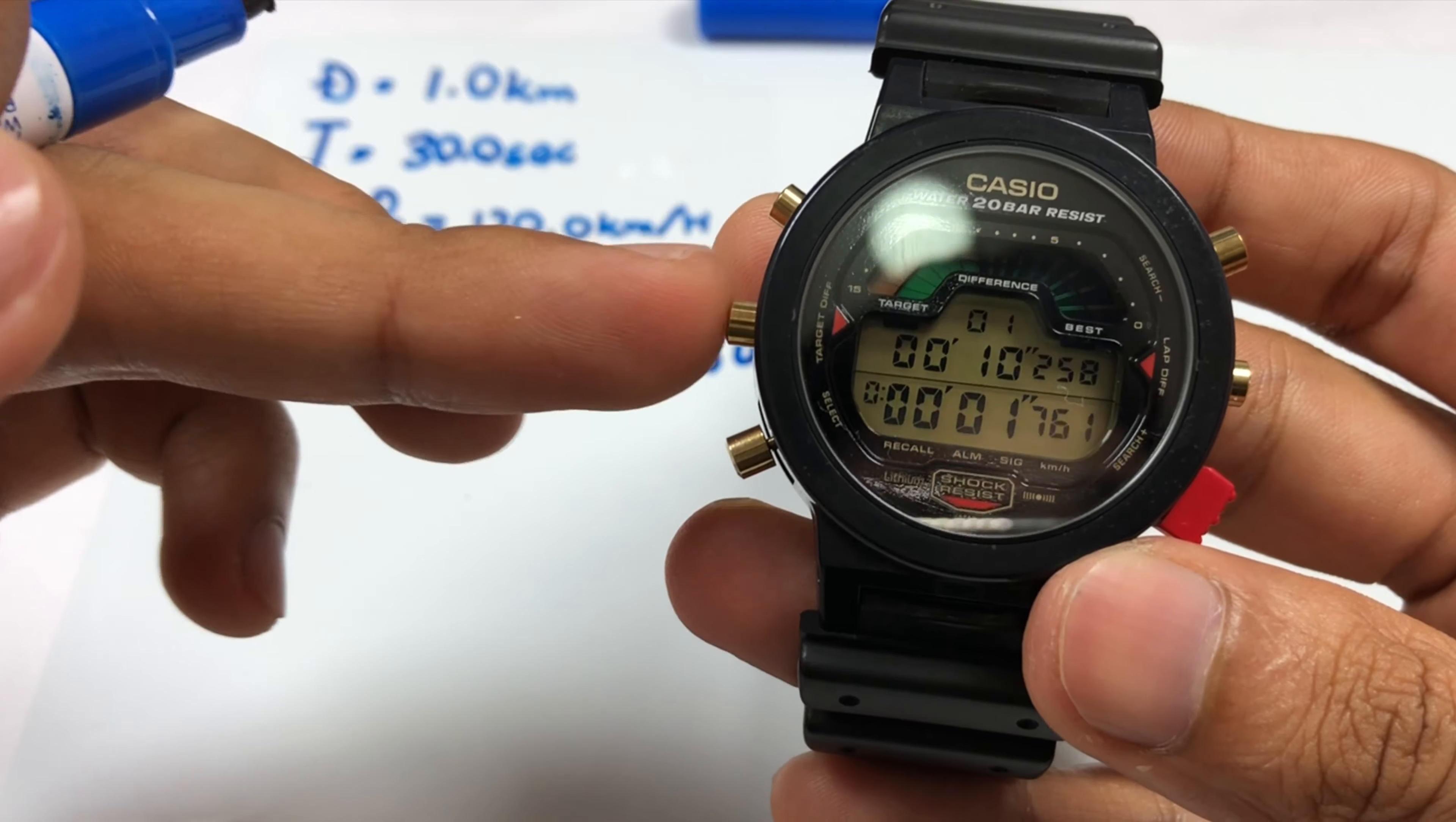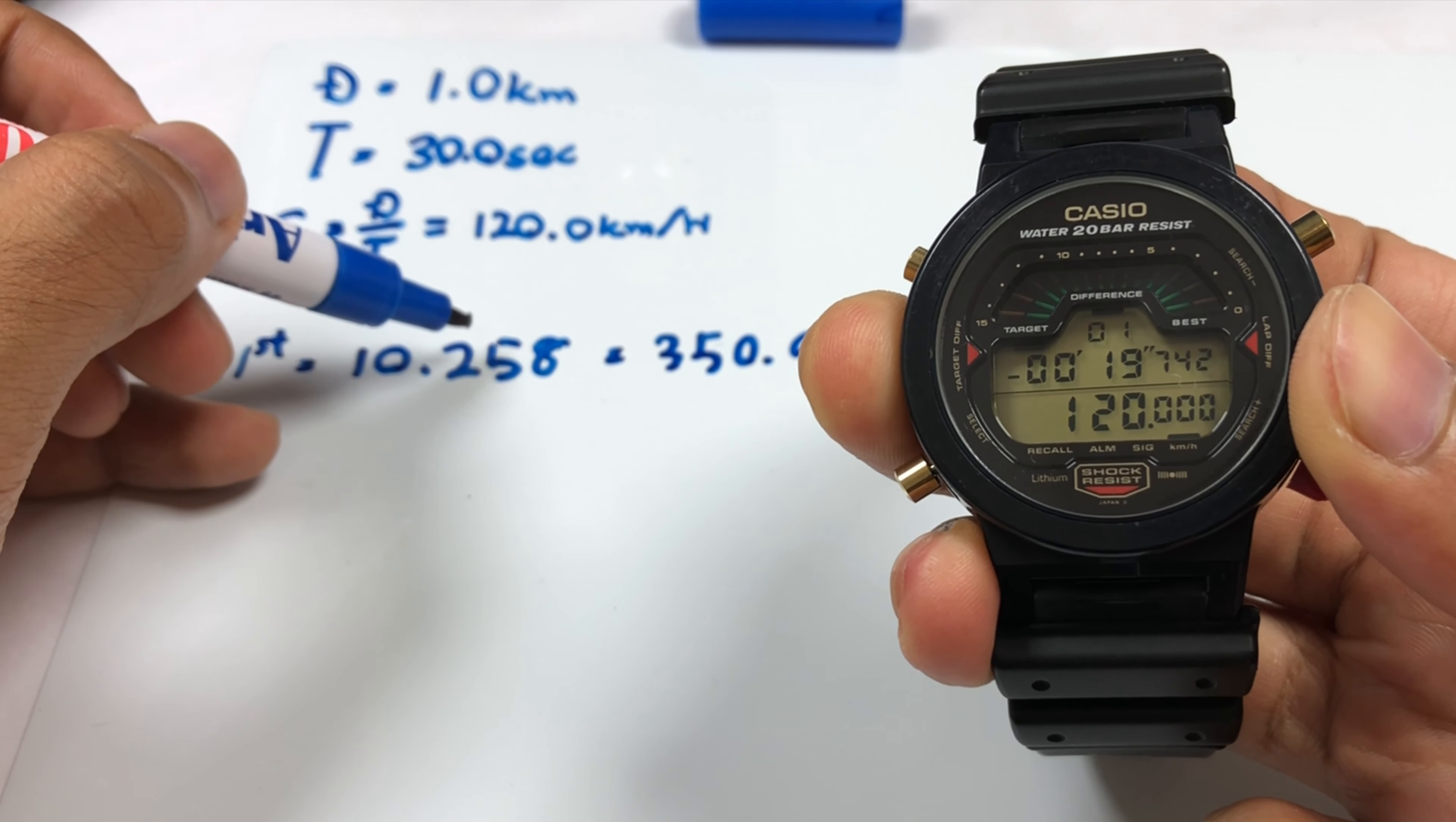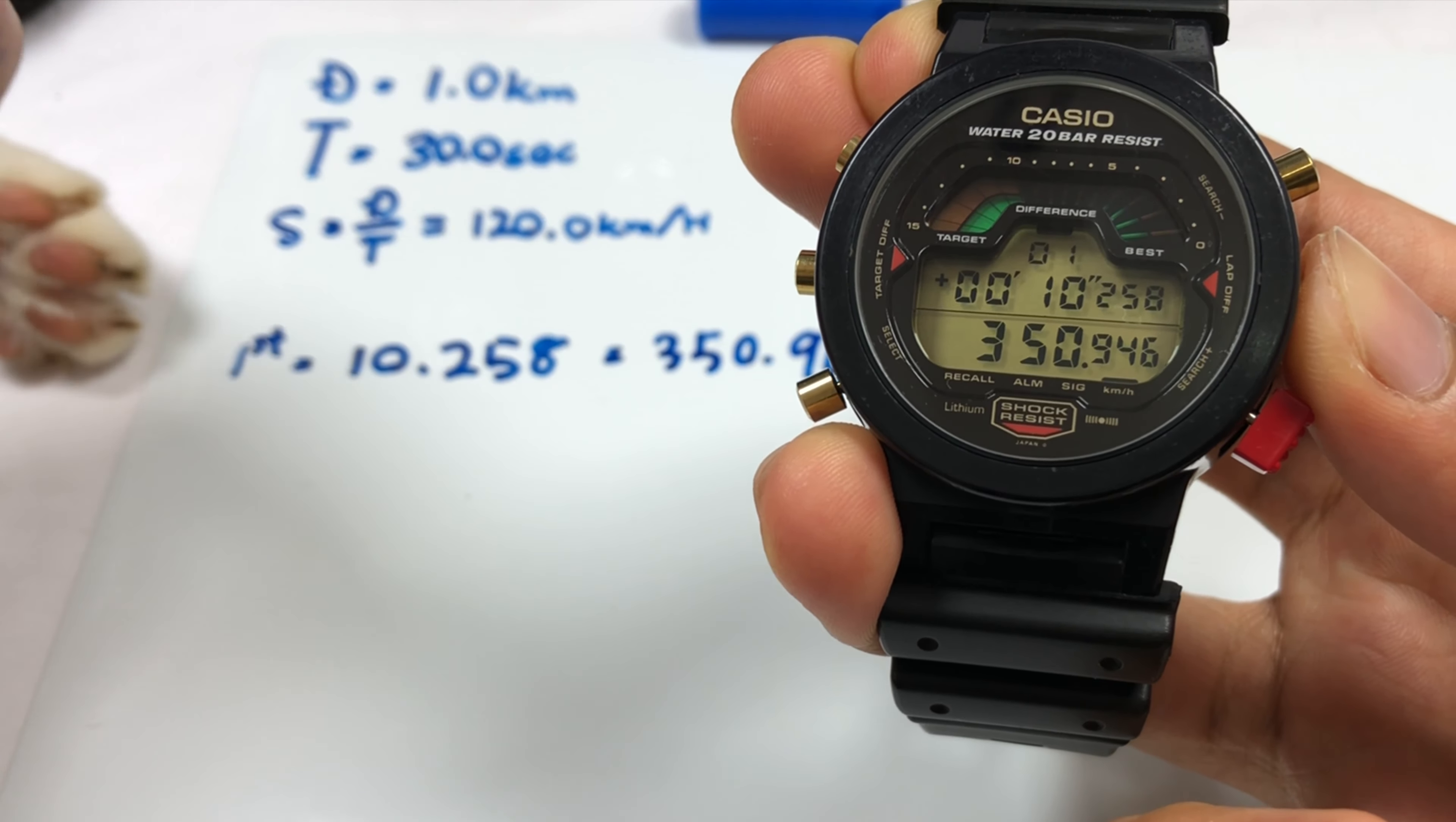If you press this center left button, you'll see this data instead. This will be the target speed, and this will be the time towards your target time. Your target time is 30 seconds, you are now at 10.258 seconds, so you are 19.742 seconds left towards your target time. That's the time difference. When you press the center right button, 10.258 is the time difference between your starting time and current time.